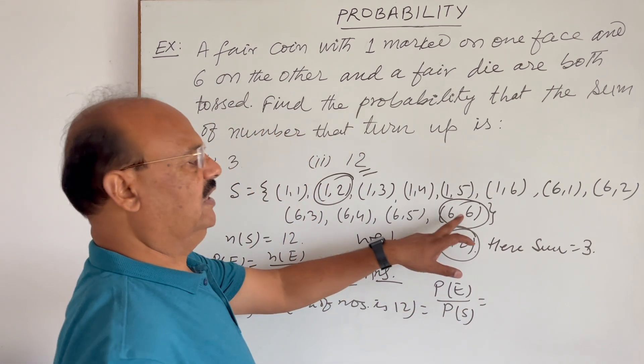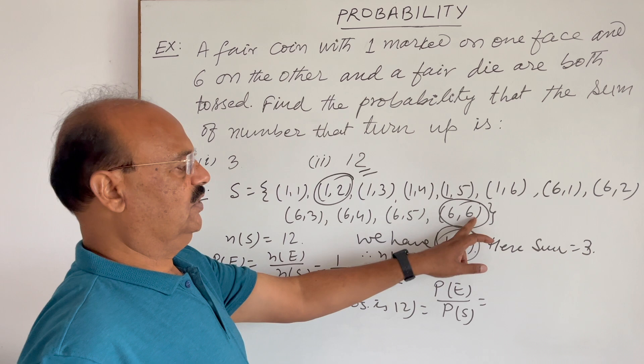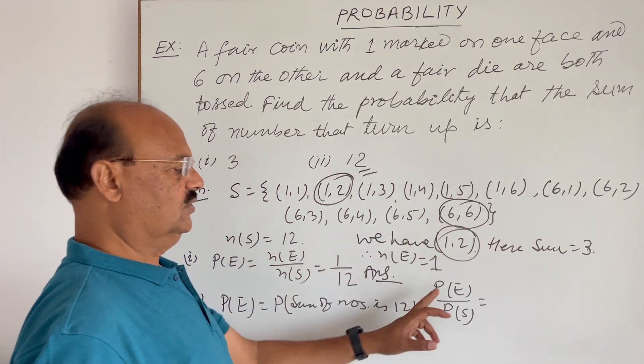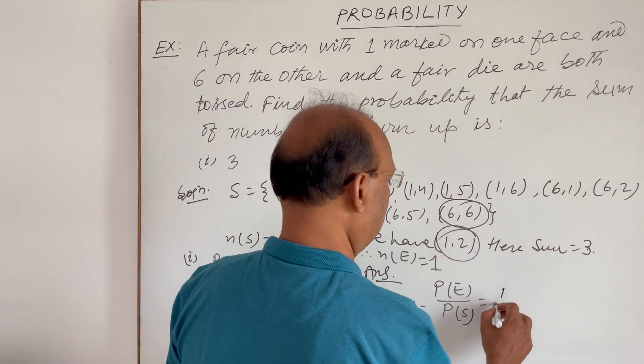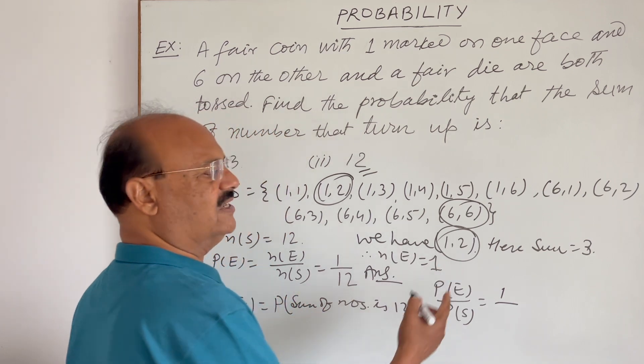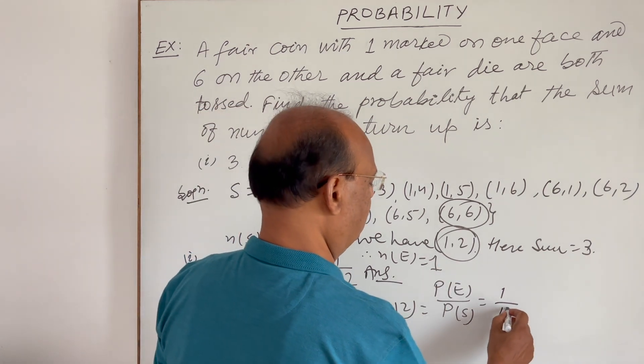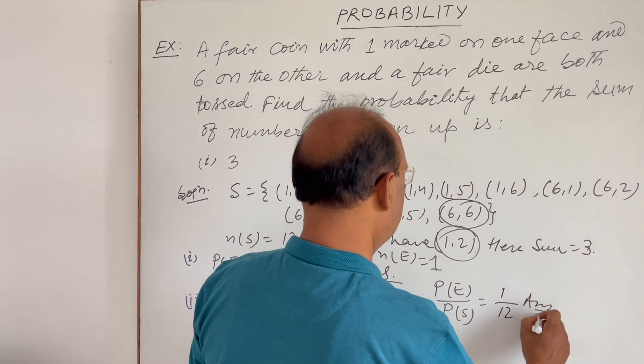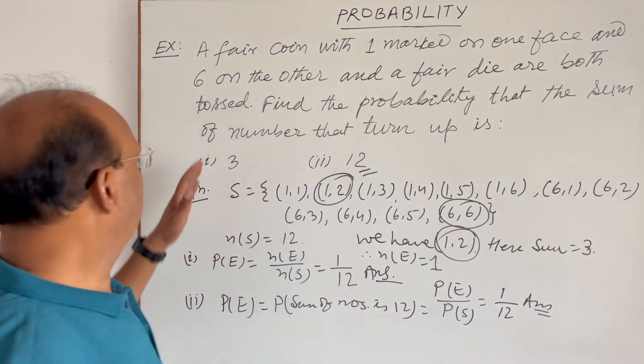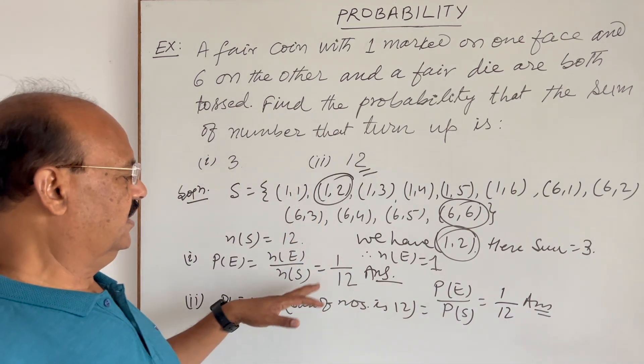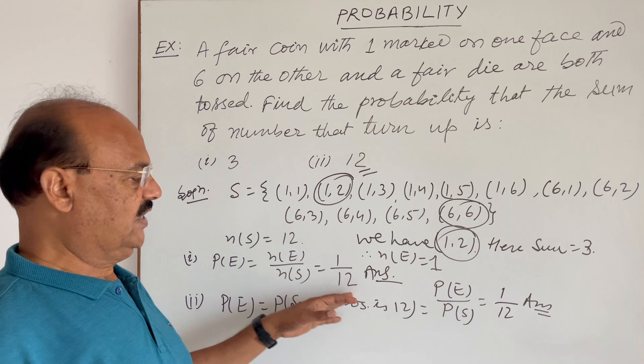So, we are getting only one such number, where sum of these two numbers, six plus six is twelve, so n(E) will be one, and n(S) will remain same, so this is twelve. So, answer is one by twelve. So in both the parts, one and two, we are getting the same answer, one by twelve, one by twelve.